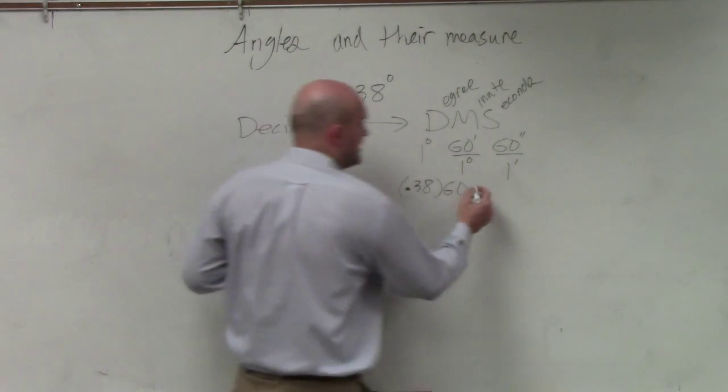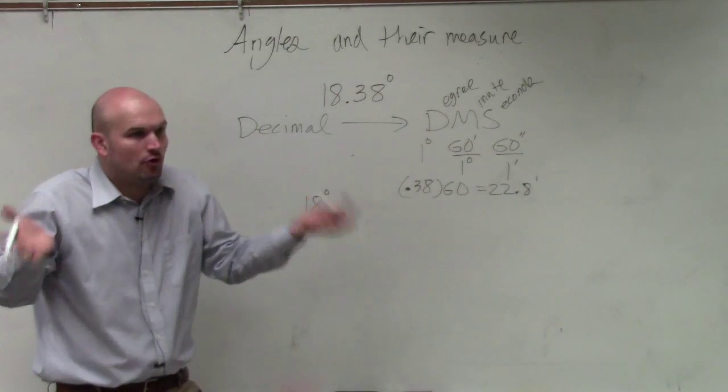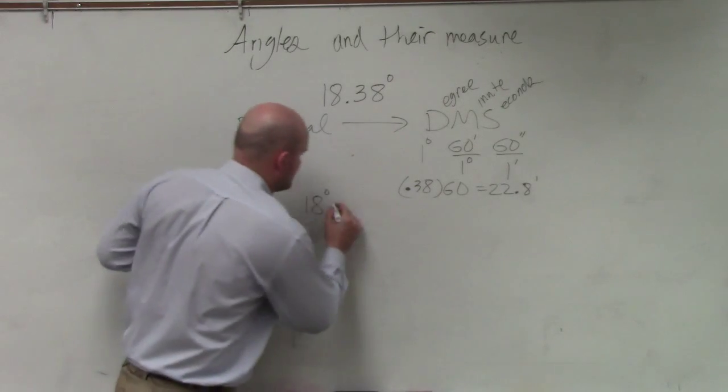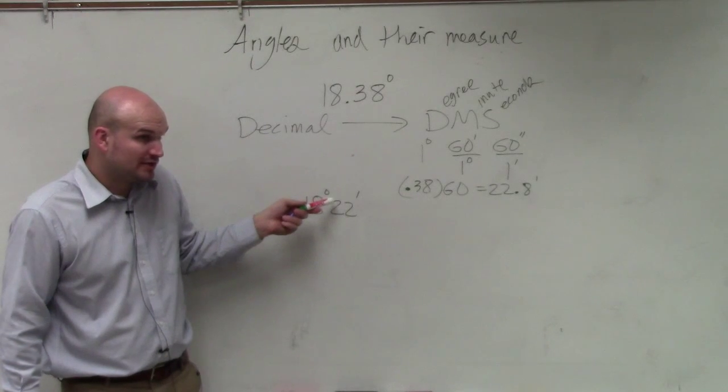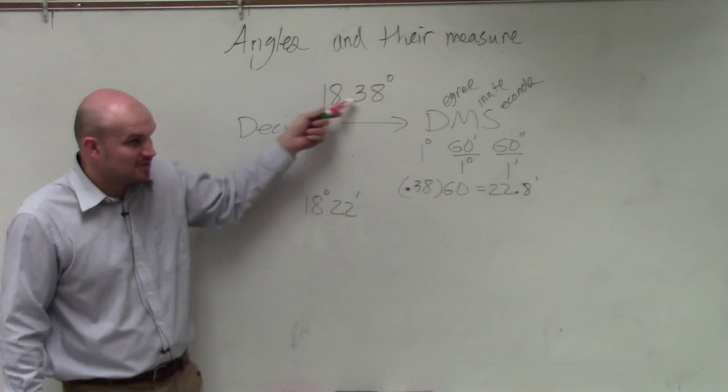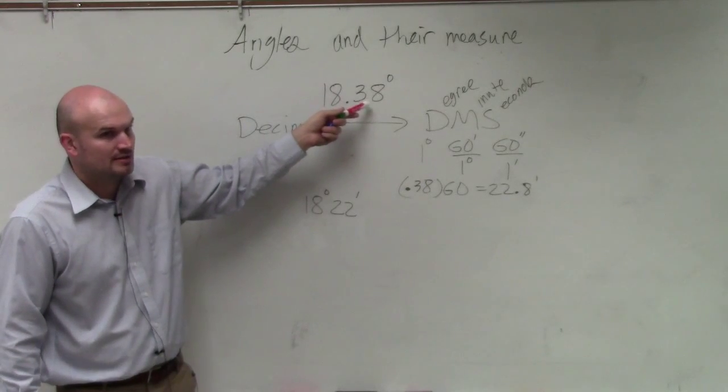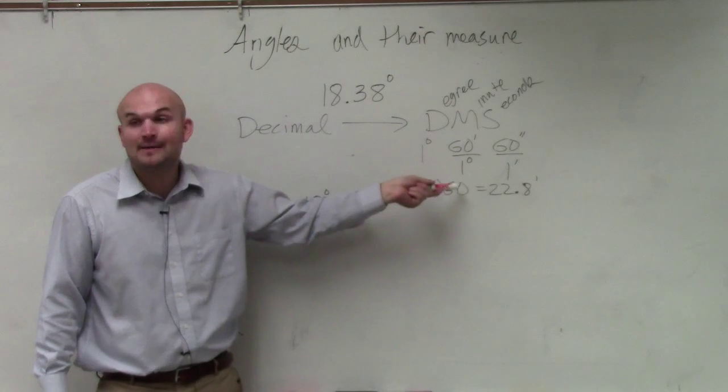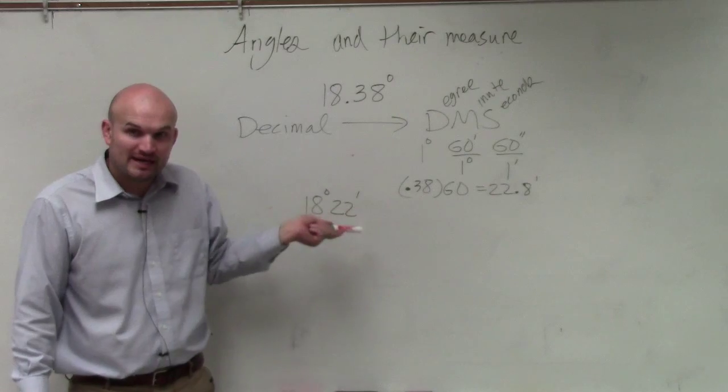So this is 22.8 minutes, right? How many full minutes do we have in 22.8? 22. So we have 18 full degrees. The rest of this is a decimal. This isn't even a full degree, right? 0.38 is not a degree. You have 18 full degrees. Out of that, you do 0.38 times 60, which gives you the number of minutes. So there's 22 full minutes.